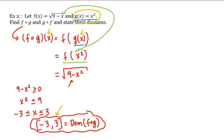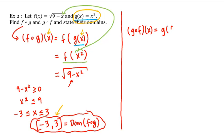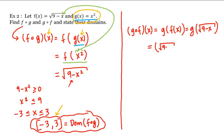What about the other direction? g composed with f of x equals g of f of x. And f of x is the square root of 9 minus x. Since g of any input is that input squared, this equals 9 minus x. Looking at this final form, the domain would be all reals.